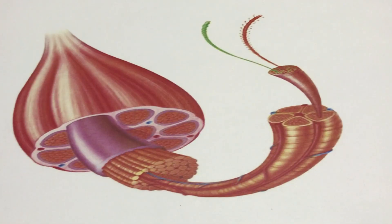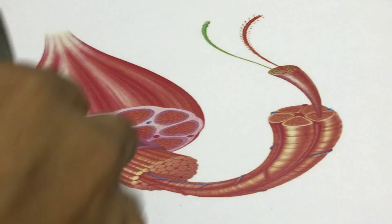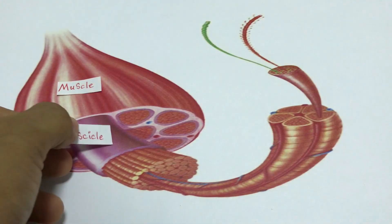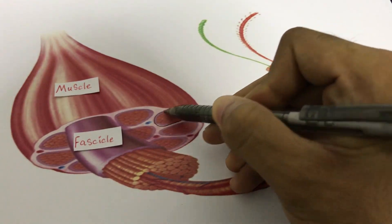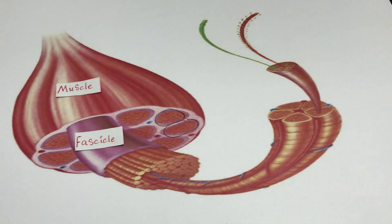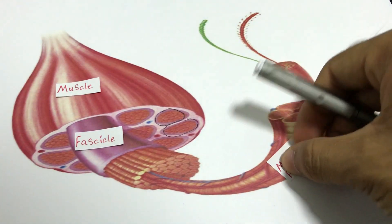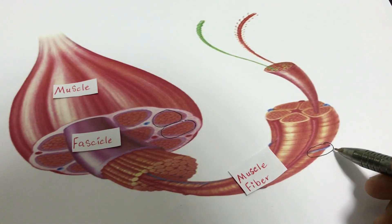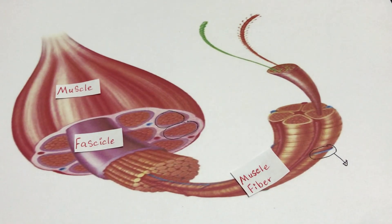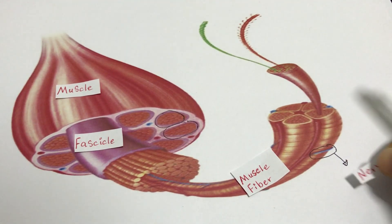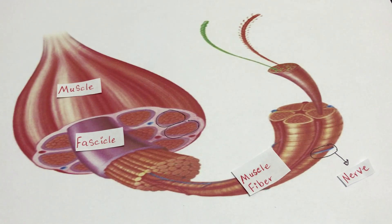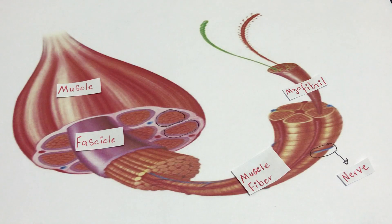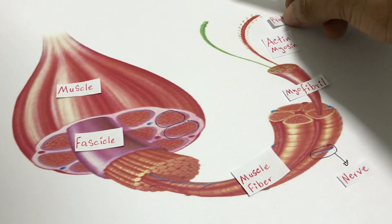Let's have a quick look at the biceps muscle structure. Here is our muscle, and in our muscle there are a lot of fascicles as you can see here — many, many fascicles. In each fascicle there are tons of muscle fibers, and clearly seen here is the nerve on the muscle fiber that transmits the action potential. On the muscle fiber there are a lot of myofibrils, and in our myofibrils we have the contractile proteins, which are actin and myosin, which we'll see in further detail later.